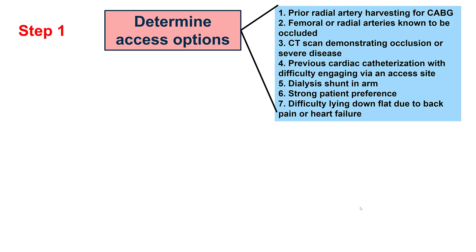So how to decide whether to go femoral or radial? This is an approach that highlights several key steps and presupposes that the operator is facile with both radial and femoral. The first step is to determine what the options are, because not everything is an option for every single patient.